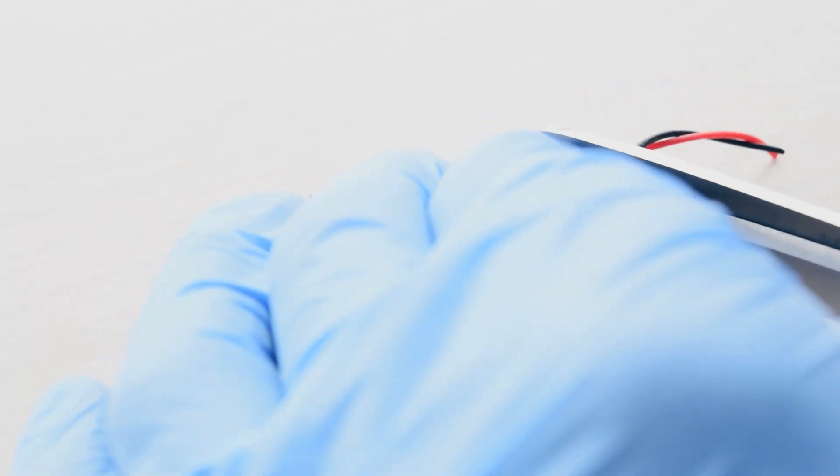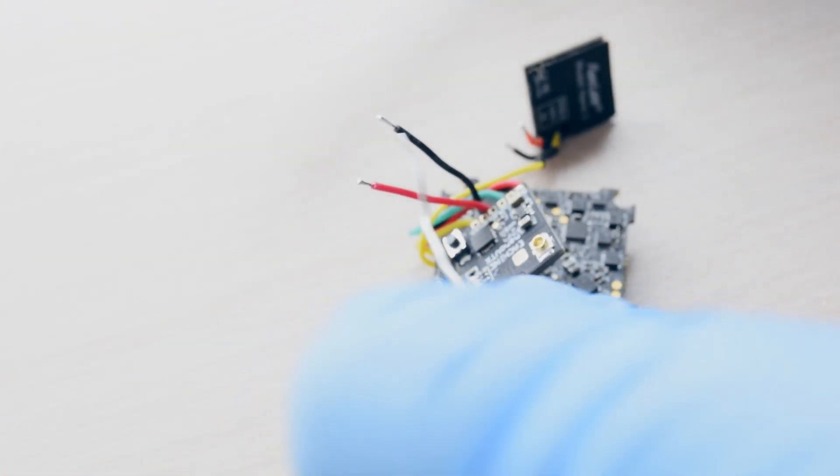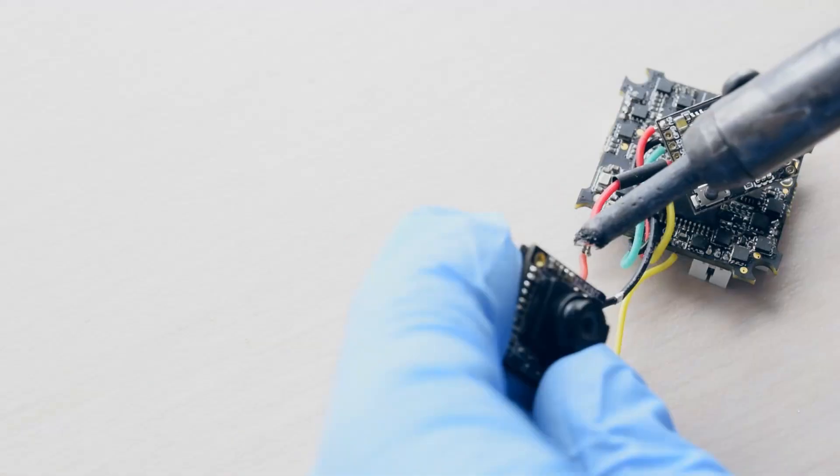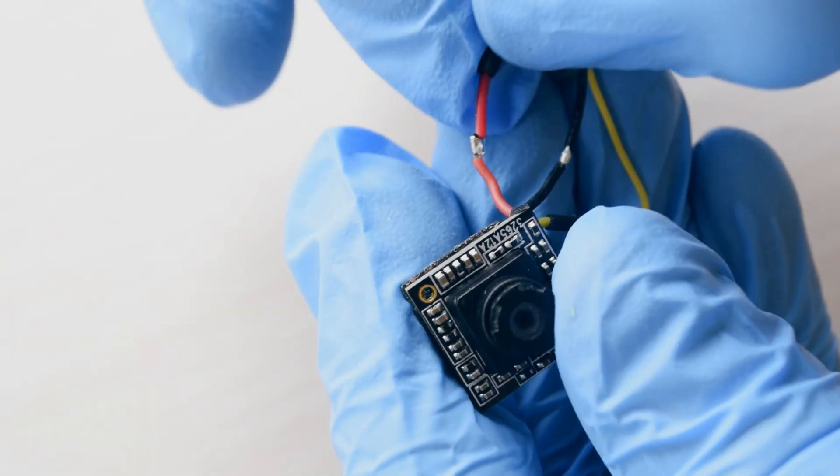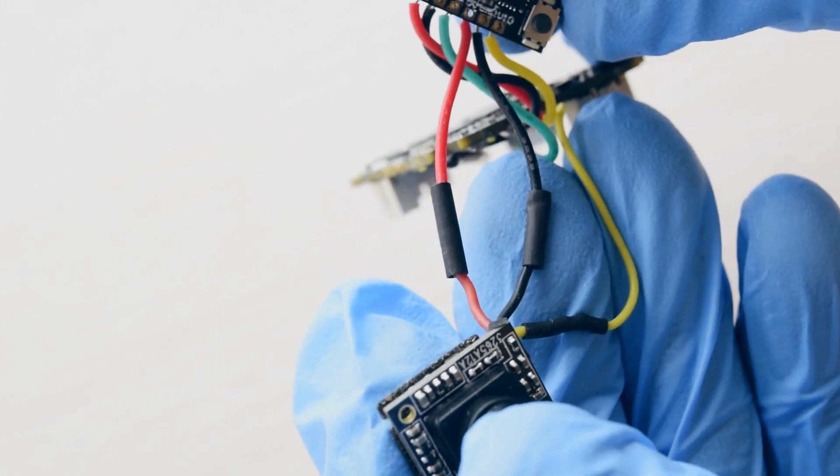To power the camera, I'm going to use these two wires coming out of the VTX. After cutting and tinning, I slid some heat shrink over each one and soldered them to the camera. The heat shrink can then be slid over the connection, and after shrinking it down, it looks like this.